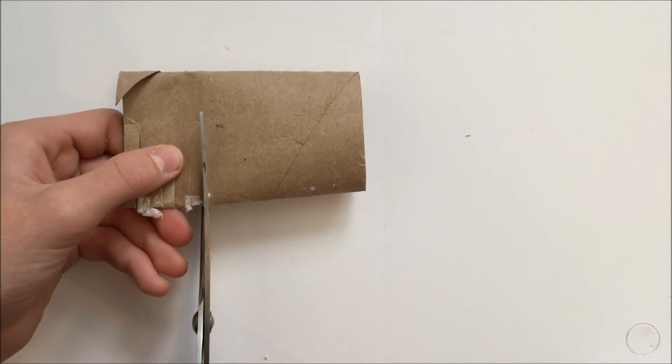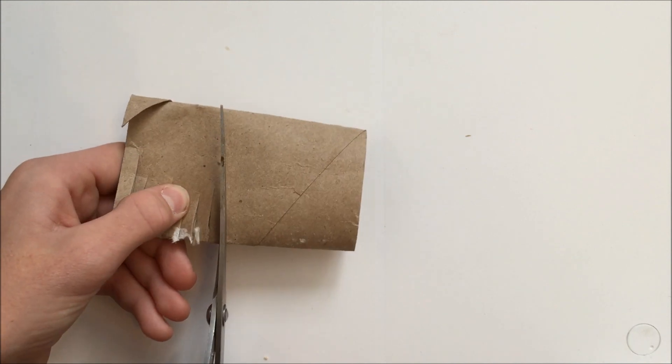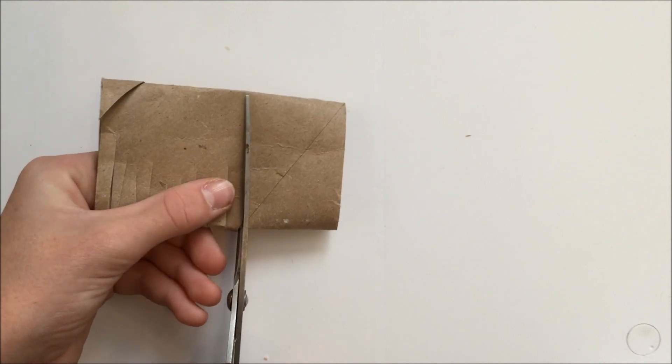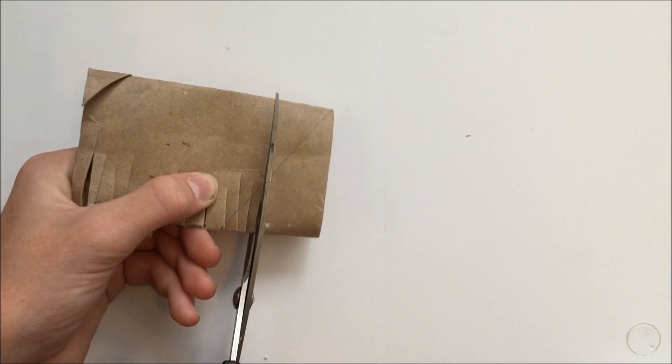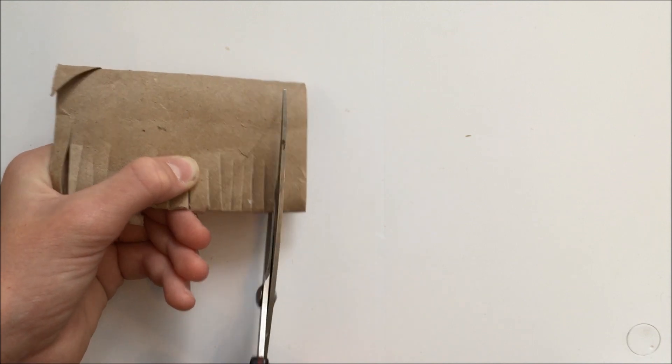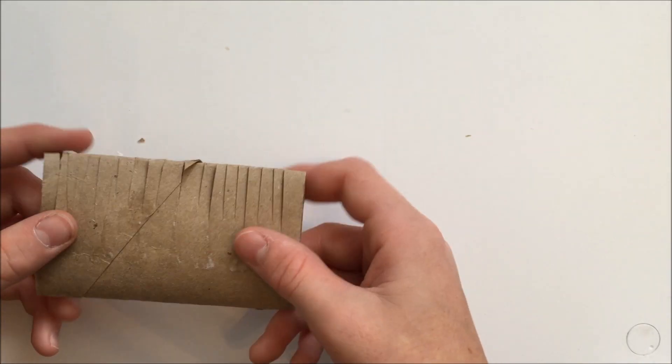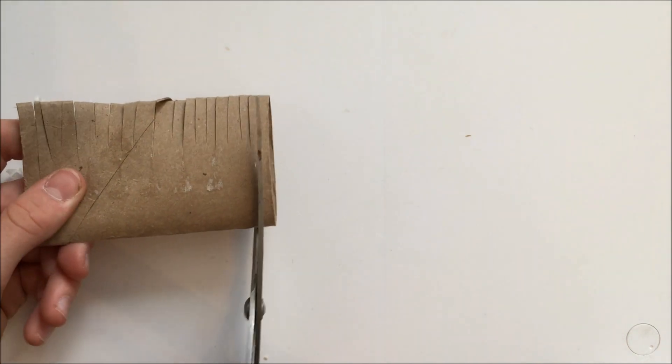And don't go too far up because you're going to be doing this on the other side so you don't want it to fall apart. So you do small pretty close together slits. Just like this. As you can see I have these slits. Now I'm just going to turn my paper towel tube over and make the same thing to the other side.